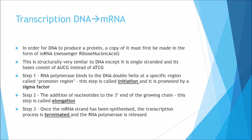Transcription breaks down into three steps. Step one: RNA polymerase binds to the DNA double helix at a specific region called a promoter region. This step is called initiation, and a sigma factor will be involved. Step two: the addition of nucleotides to the three prime end of the growing chain — this is called elongation. Then the final step: once the mRNA strand has been synthesized, the transcription process is terminated and the RNA polymerase is released — this step is called termination.